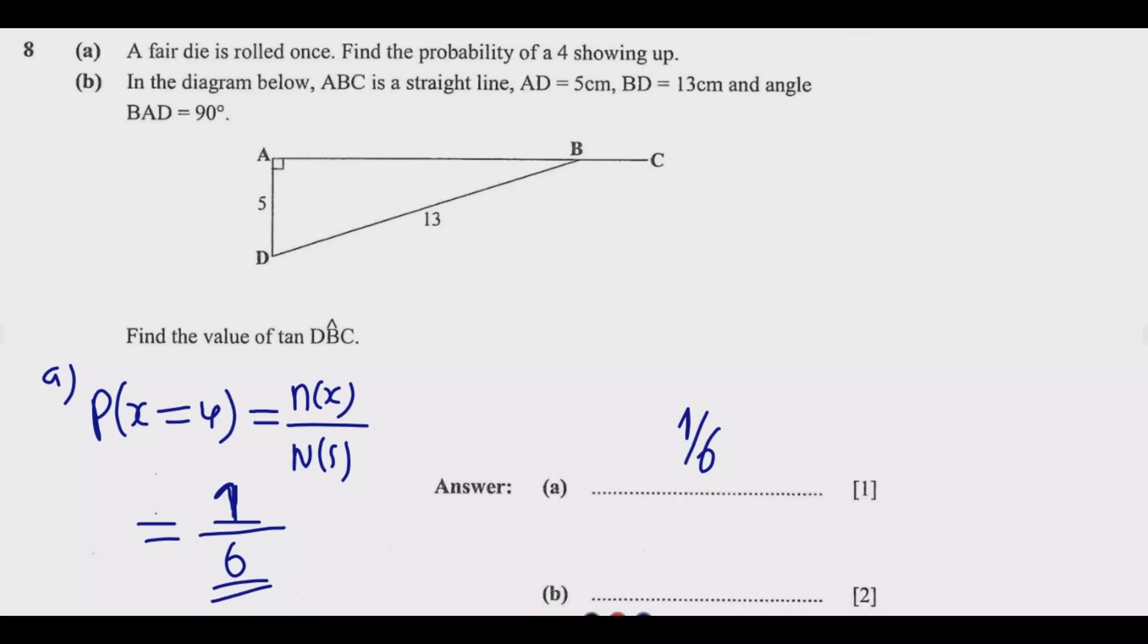Then we look at question b. In the diagram below, ABC is a straight line, AD equals 5 centimeters, BD equals 13 centimeters, and angle BAD equals 90 degrees. Find the value of tan DBC. So that angle is this angle, the outer angle, the exterior angle.